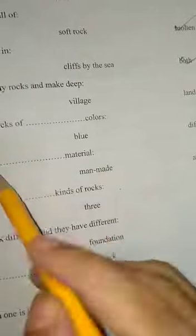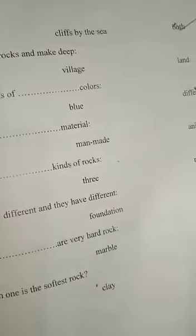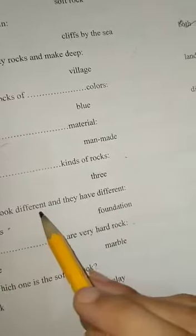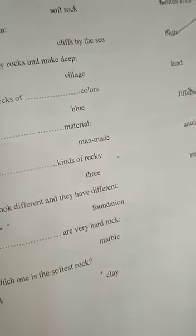Rocks are made of natural material, man-made material, or animals. The answer is natural. There are two, three, or many kinds of rocks. Many rocks look different and they have different properties like foundation or names.